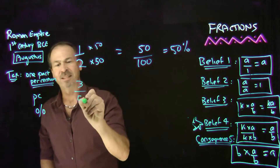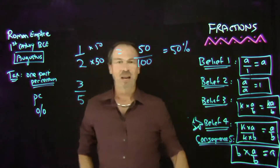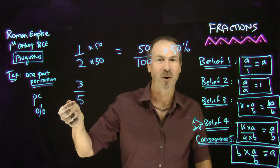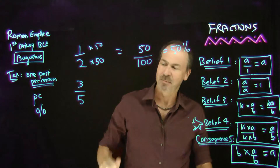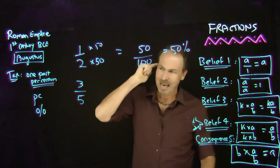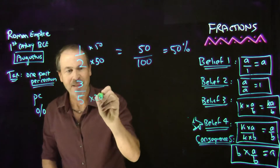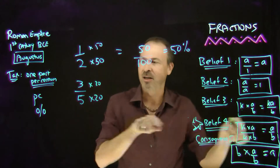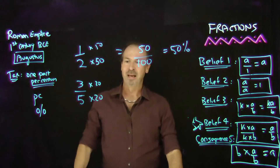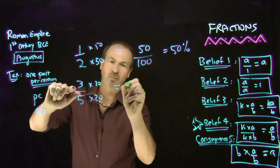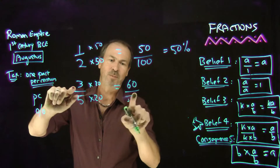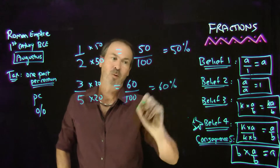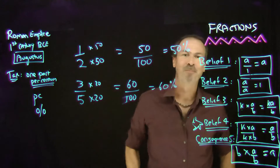What about three-fifths? My challenge is: can I rewrite this as a fraction with 100 on the bottom? 5 seems nice — if I multiply by 20, that would get me to 100. And to keep the fraction unchanged, I better multiply the top by 20 as well. So now I can see this is really 60 parts per 100 — it's actually 60 percent.